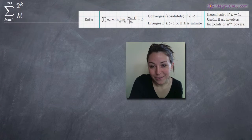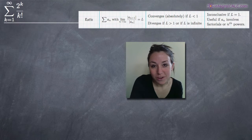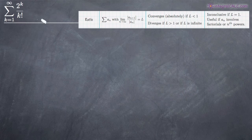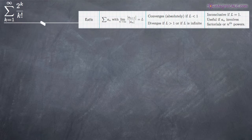Hi everyone! Welcome back to IntegralCalc.com. Today we're going to be doing a ratio test problem, and with this one we've been given the function 2 to the k divided by k factorial, and we've been asked to determine whether or not this series converges or diverges.